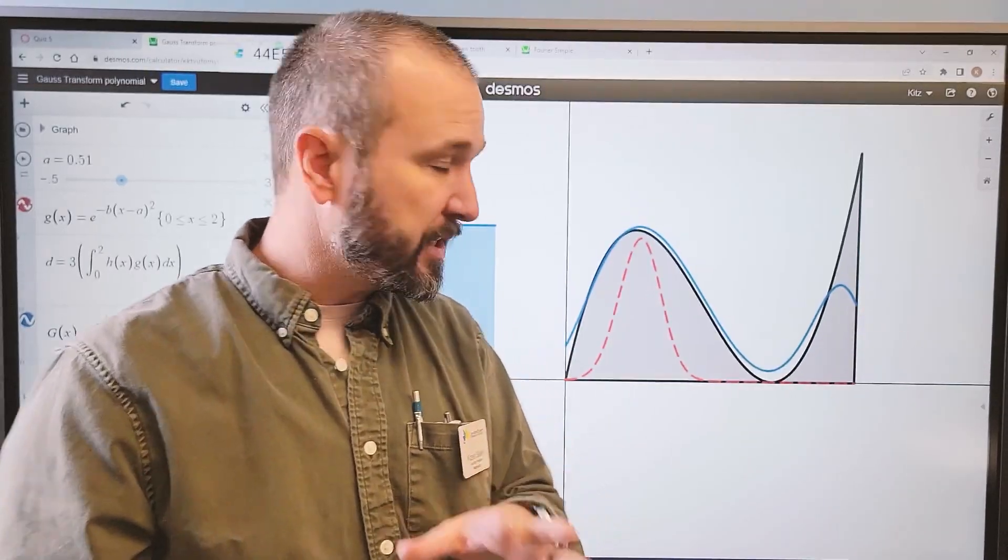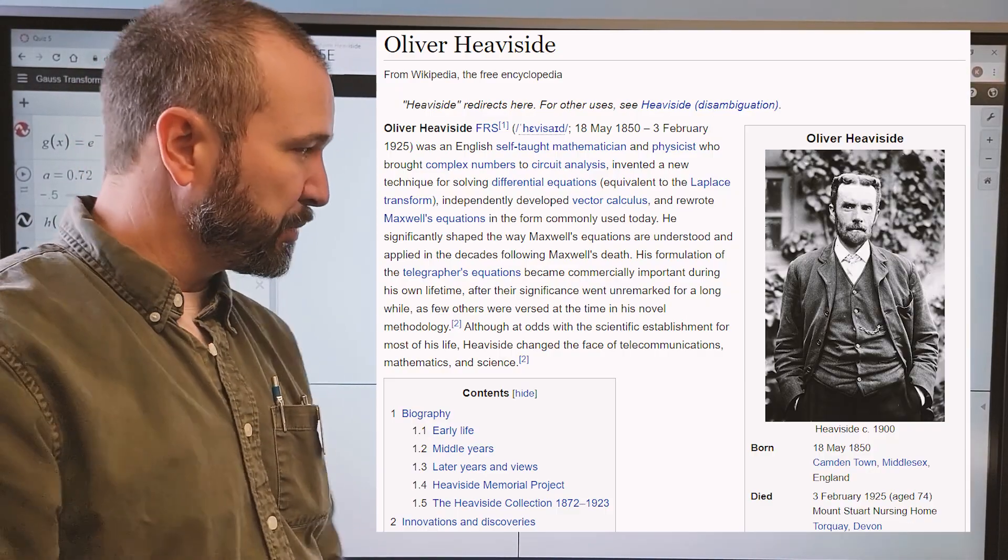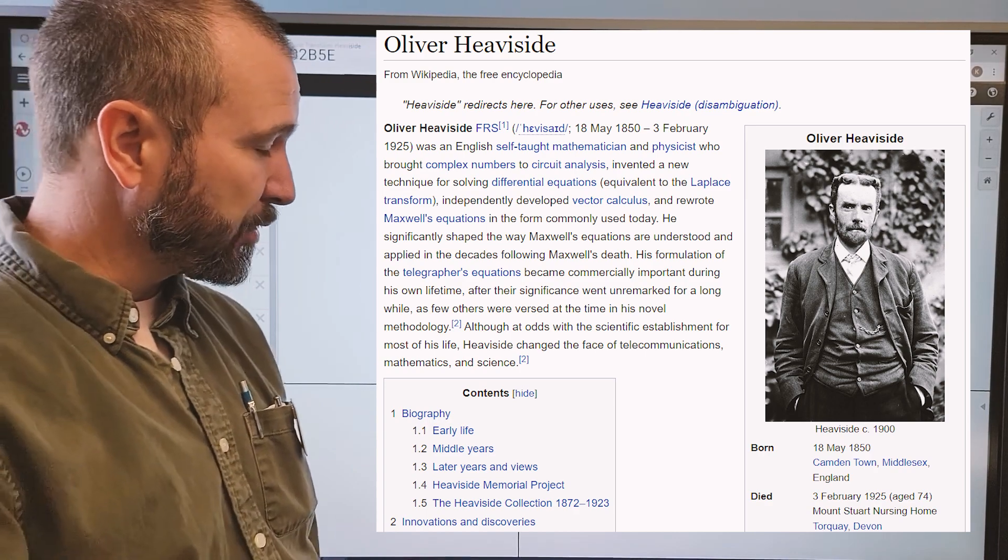I have another couple of examples that illustrate this behavior. The name of this graph of this metal plate is called the Heaviside function. It's named after Oliver Heaviside.